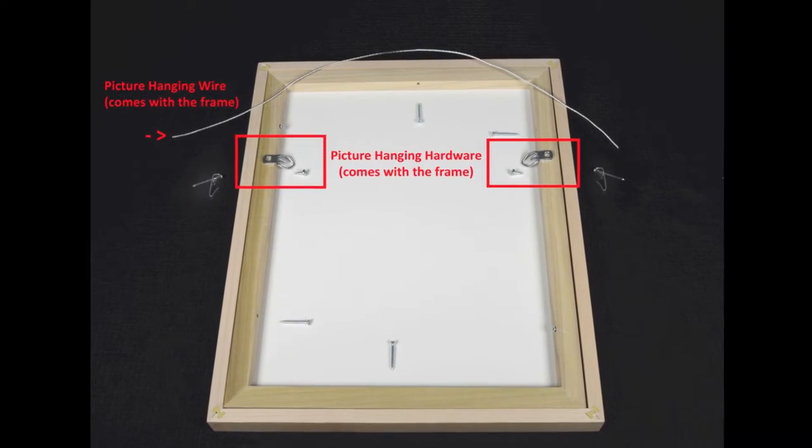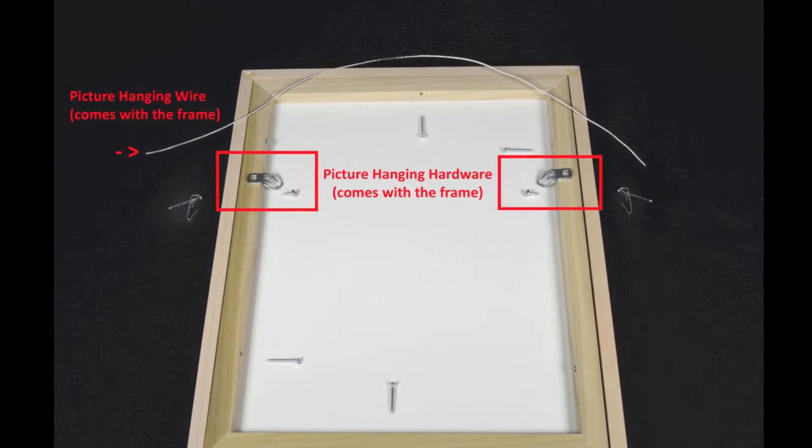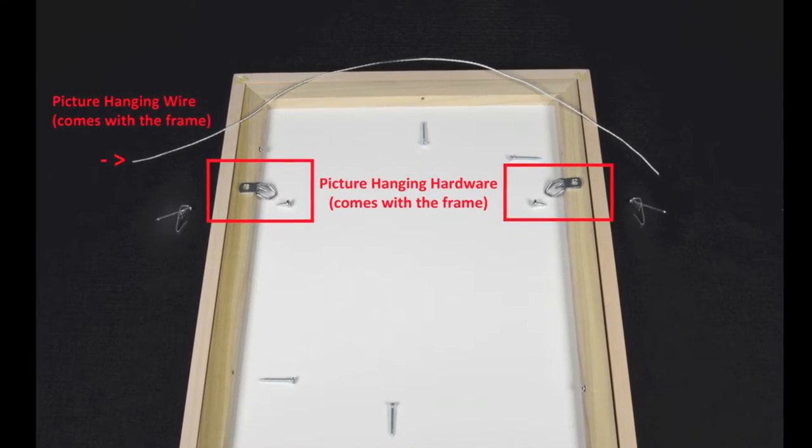While still face down on your clean work surface, attach the picture hanging hardware at your desired location with the two short screws included with the kit.